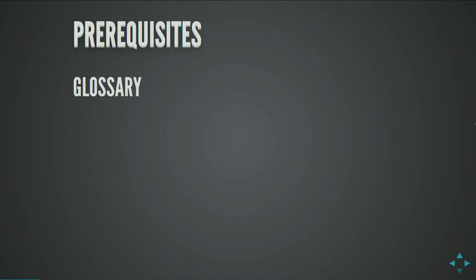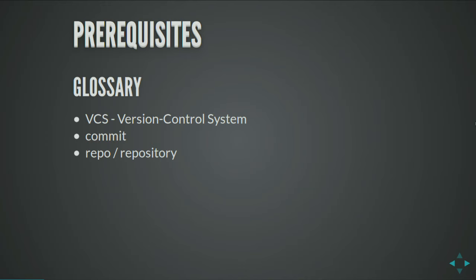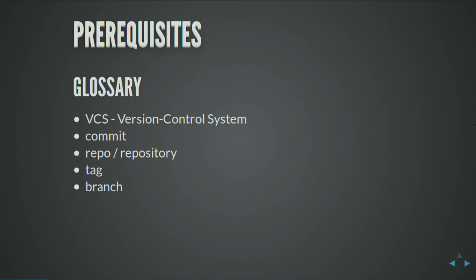We have a glossary just to make sure you're in the right place. VCS — version control system; commit; repo/repository, which we'll use interchangeably; tag; and branch. These are the common terminology used across all version control systems, so when we throw these words out, you'll know what we're talking about.